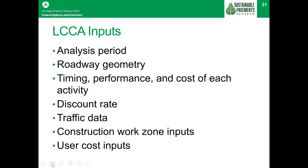Some sample project-level data for a life cycle cost analysis: the roadway geometry includes number of lanes in each direction, lane widths, and work zone lengths. For traffic data, we have the AADT, annual traffic growth, percent trucks, hourly traffic distributions, lane capacities, and queue distribution capacities. For user cost data, we have vehicle operating costs, added vehicle operating costs and time, and value of user time delay. Additionally, we have agency costs, service life, and work zone inputs like activity duration and hours of operation.